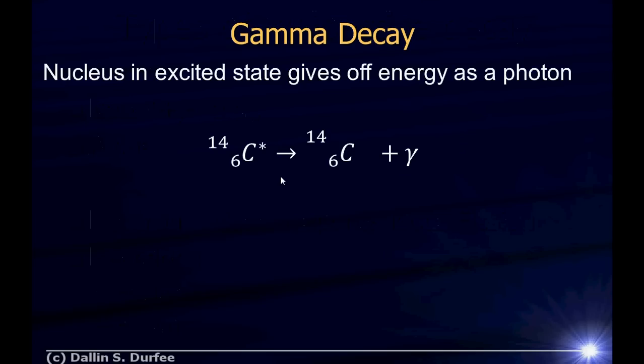So let's first talk about gamma decay. Gamma decay happens because a nucleus is in some excited state, and it gives off energy as a photon to go to a lower energy state. It's kind of like a hydrogen atom when its electron goes from a higher energy to a lower energy state — it gives off its energy as a photon. It's the same idea, only now it's the nucleons in the nucleus that are changing state.